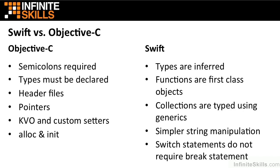And finally, alloc and init — gone, goodbye. You won't have to double square bracket every initialization call that you make like in Objective-C. In Swift, all types are inferred. You can explicitly define the type of a constant or a variable, but the compiler will use context and figure it out.